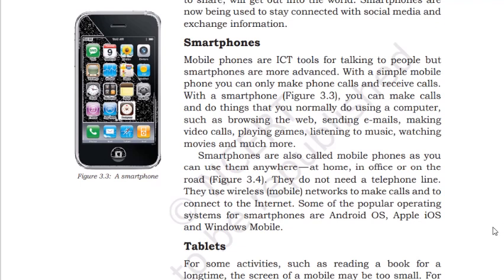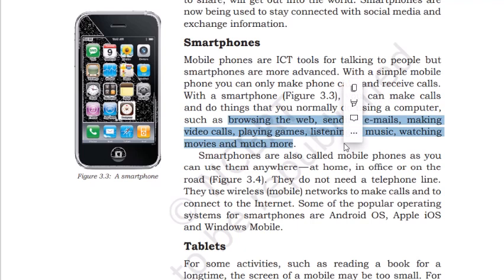A smartphone is a capable device used for browsing the web, sending email, making video calls, playing games, listening to music, watching movies, and much more. Smartphones can be used anywhere — at home, in an office, or on the road. They do not need a telephone line; they use a wireless mobile network. Some popular operating systems for smartphones are Android OS, Apple iOS, and Windows Mobile.